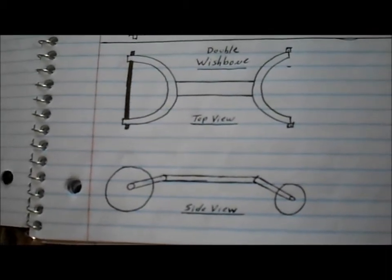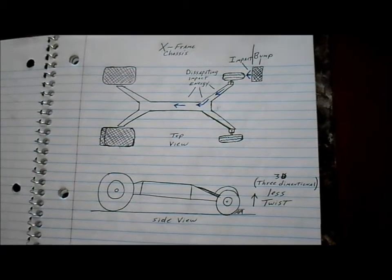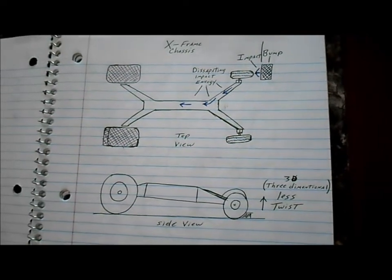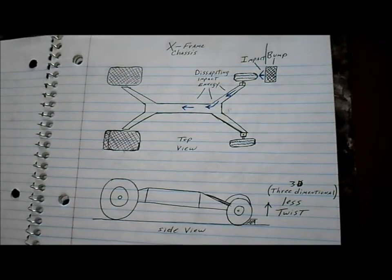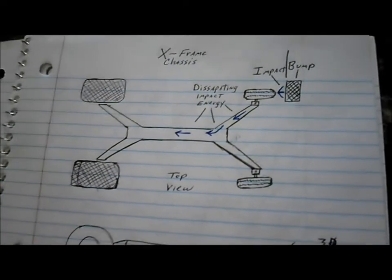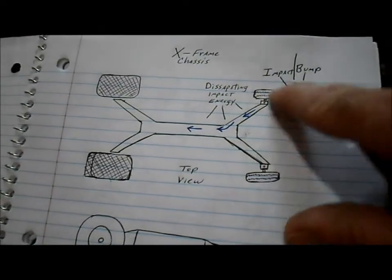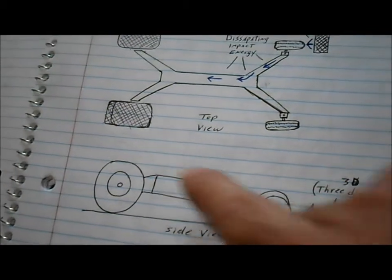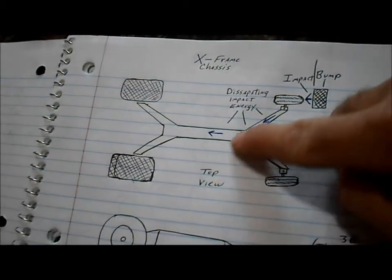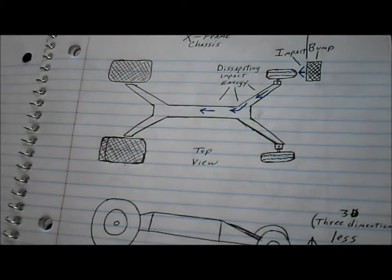This would be like a double wishbone that way it could absorb some of the impact, and then the double wishbone would be even kind of a 3D type style. While researching for this project I also came across this X-frame chassis idea. Basically a backbone constructed and then it's basically like an X or like the double wishbone style. But then if you hit a bump or something it would send a lot of the energy through the frame rather than just a straight across here taking all the impact. It would help to dissipate the impact energy.